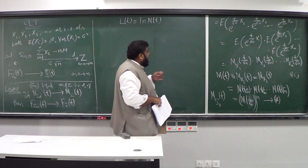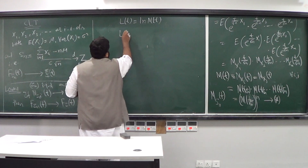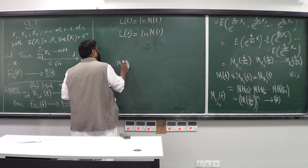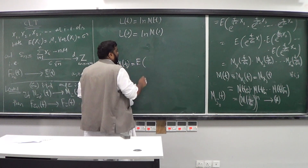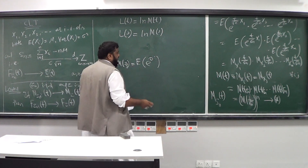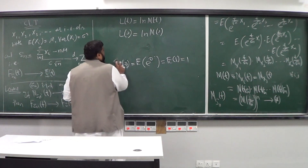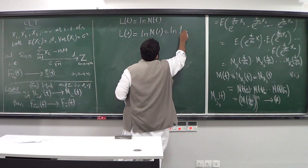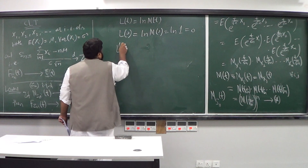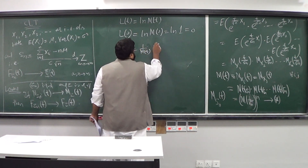Let's compute l(0). It equals log M(0). Now M(t) = E[e^(tX)], so M(0) = E[e^0] = E[1] = 1. Therefore l(0) = log(1) = 0. For the first derivative, l'(t) = M'(t)/M(t). So l'(0) = M'(0)/M(0).